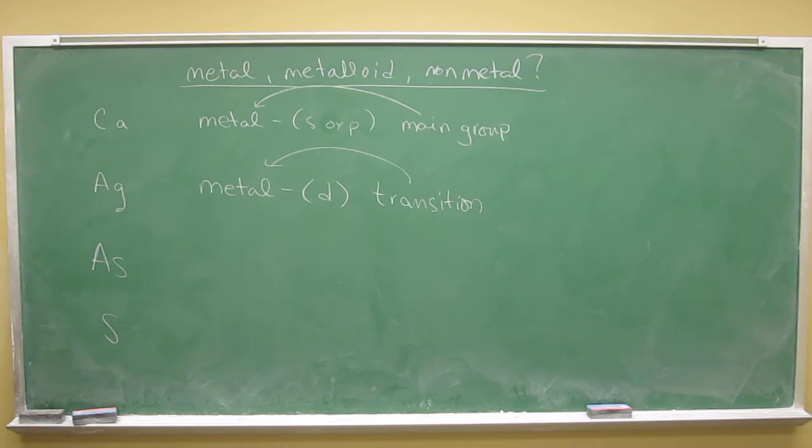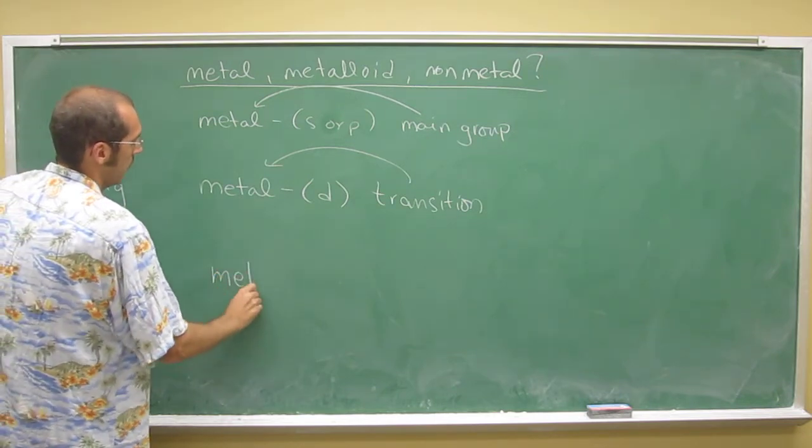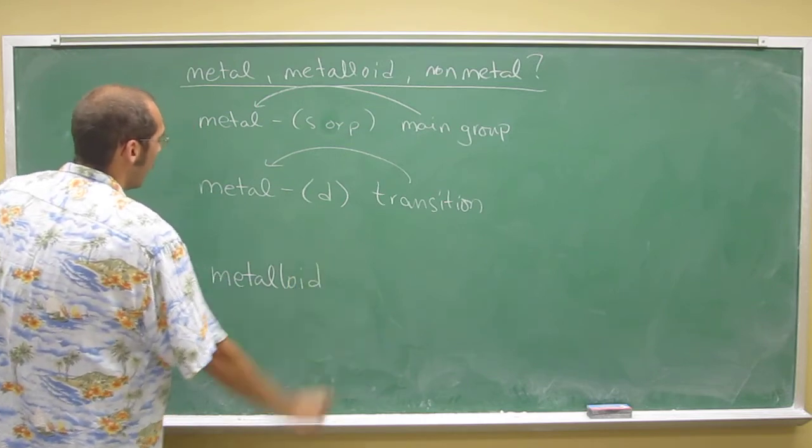Arsenic's in the little staircase in between the metals and the metalloids - or the metals and the non-metals - so it's a metalloid, it's got properties of both.